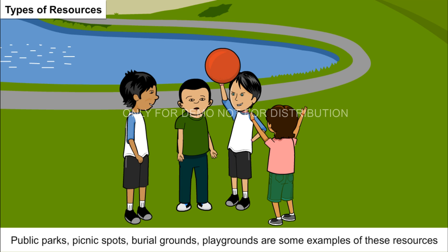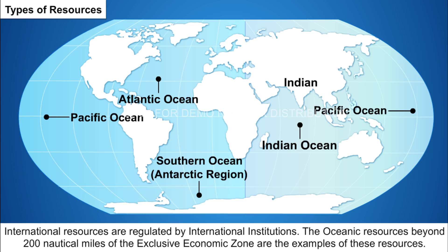National resources are the resources which belong to a particular nation. Roads, railways, canals, and airports of a nation are some examples. International resources are regulated by international institutions — the oceanic resources beyond 200 nautical miles of the exclusive economic zone are an example of these resources.